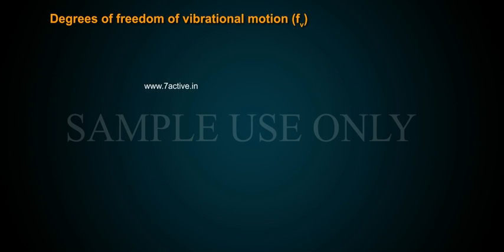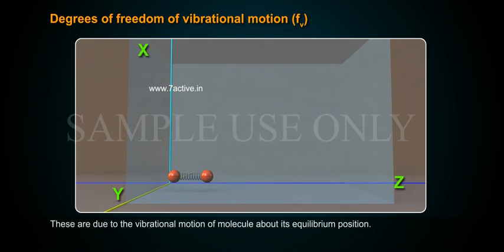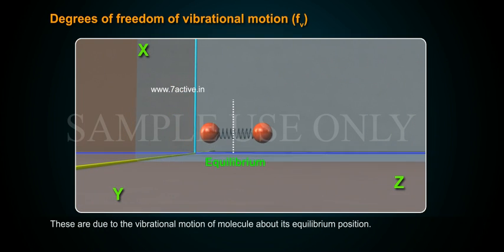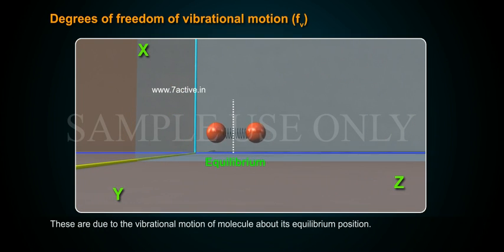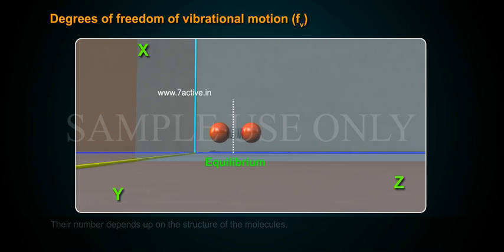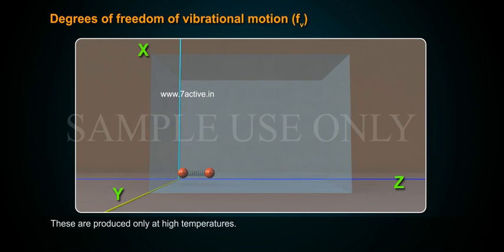Degrees of freedom of vibrational motion: These are due to the vibrational motion of a molecule about its equilibrium position. The number depends upon the structure of the molecules. These are produced only at high temperatures.